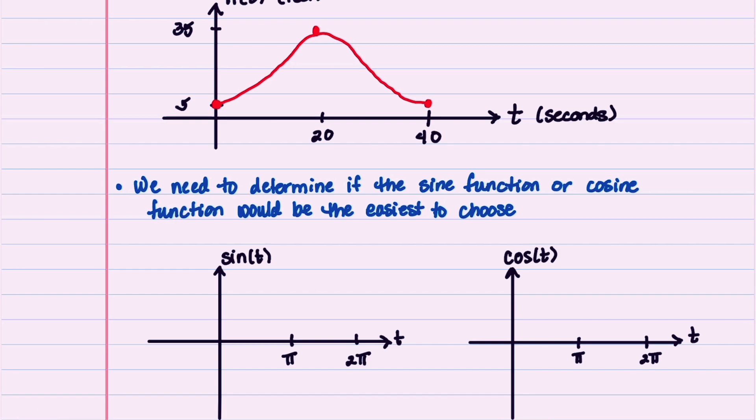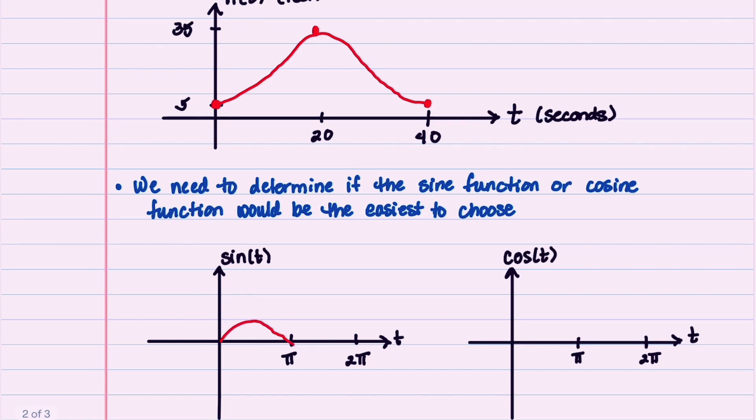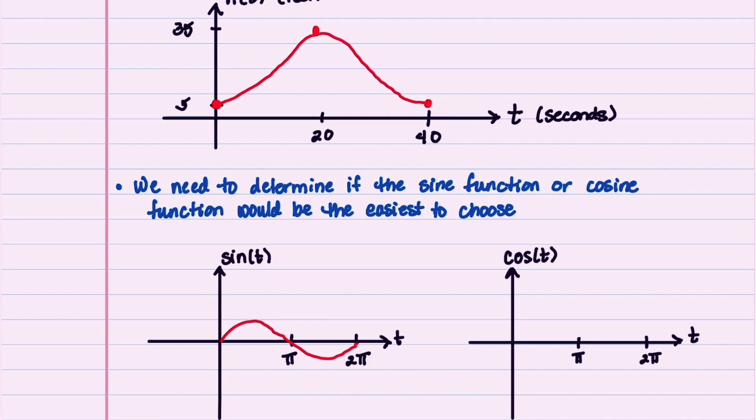Let's now graph sine t and cosine t and see which one best resembles our graph of h of t. Sine t looks like this, and cosine t looks like this.